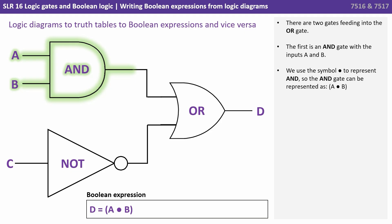There are two gates feeding into the OR gate. The first is an AND gate with the inputs A and B. We use the symbol of a dot to represent AND in Boolean algebra so the AND gate can be represented as brackets A dot B brackets.